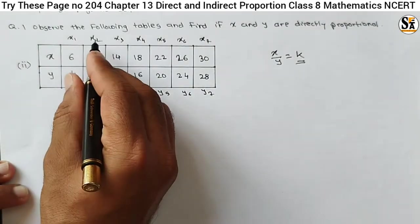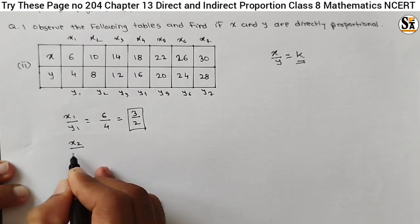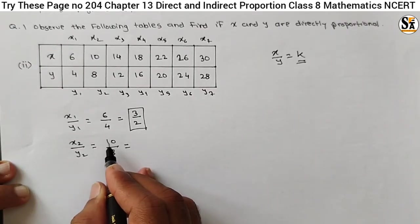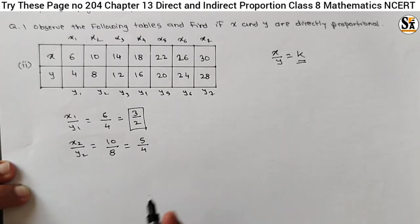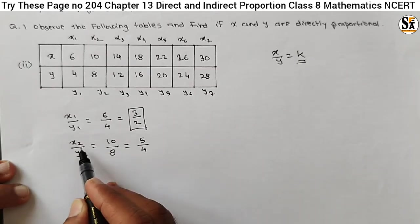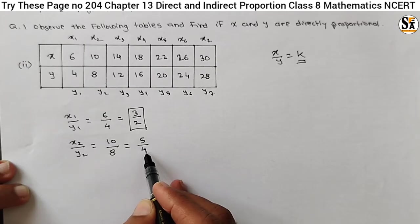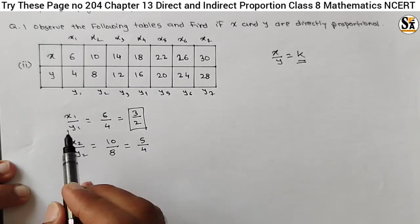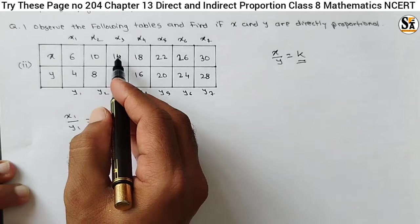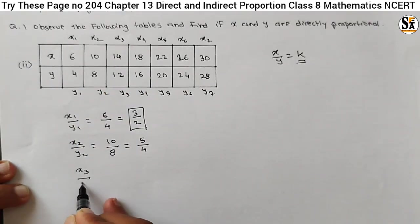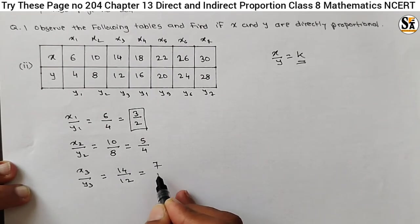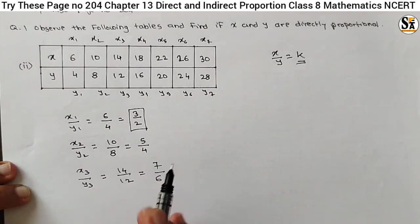Take the ratio for the second value of x, that is x2 upon y2. x2 is 10 and y2 is 8. The ratio, dividing by 2, will be 5 by 4. Now see here — for x1, y1 the ratio is 3 by 2, and for the second value of x and y the ratio is 5 by 4. The ratio is different. Though the values are increasing, the ratio is not the same. Let's try the next: x3 upon y3. x3 is 14 upon 12. The ratio will be 7 by 6. Again, the ratio is not constant.